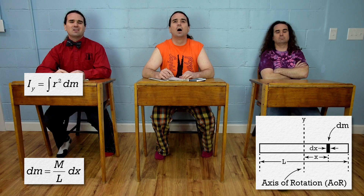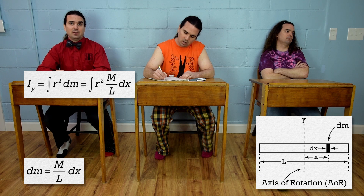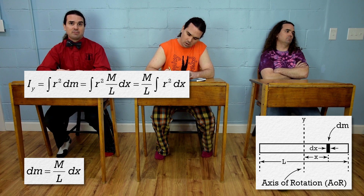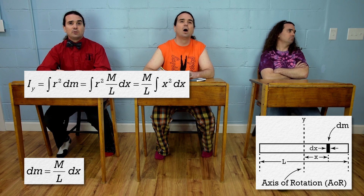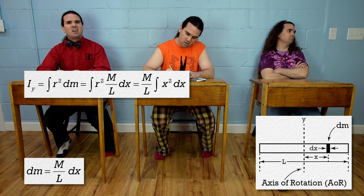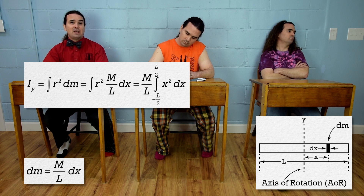Billy, see if you can solve it from here. Substitute mass over length times dx in for dm in the rotational inertia equation. The total mass of the rod and the length of the rod are not dependent on position, so mass over length can come out from underneath the integral. And r is just a generic letter for direction, so let's substitute in x instead, which means we can now put in the limits for the integral. x varies from negative one-half of L on the left side of the rod to positive one-half of L on the right side of the rod, so those are our limits.